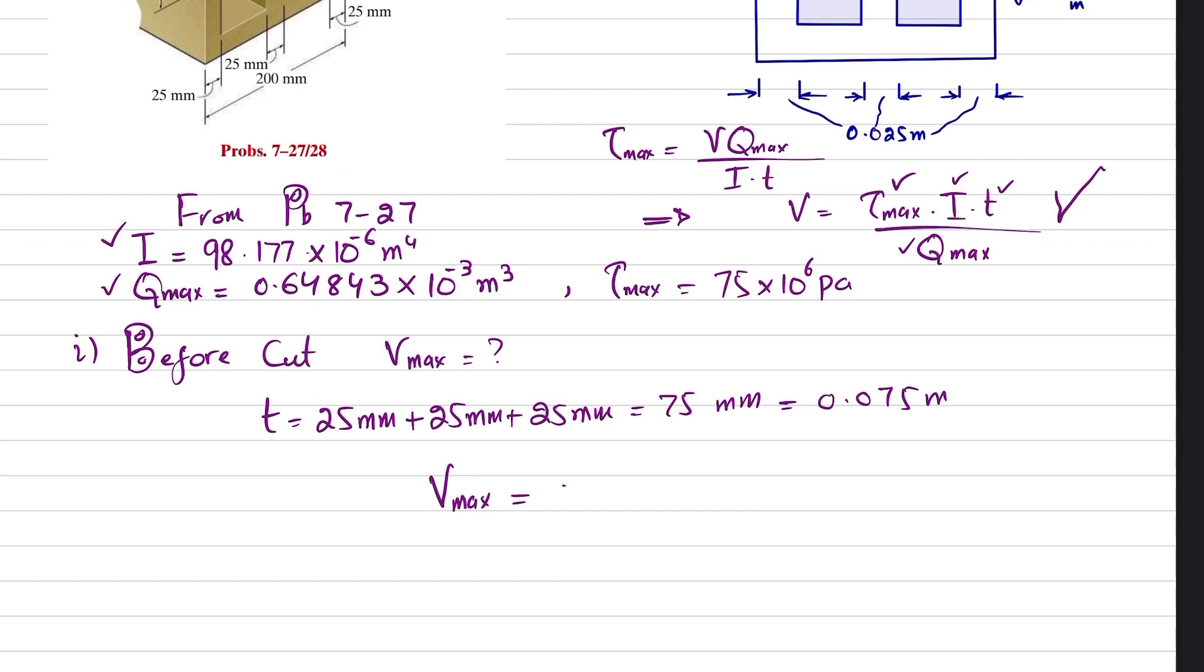When you put it, you will get maximum shear force. Put the values: tau_max is 75 × 10^6, I is 98.177 × 10^-6, t is 0.075, divided by Q_max which is 0.64843 × 10^-3. When you solve this, you will get the shear force comes out to be 851,656.63 N.